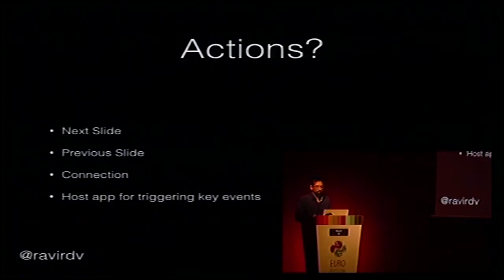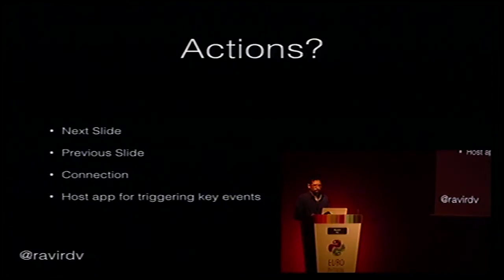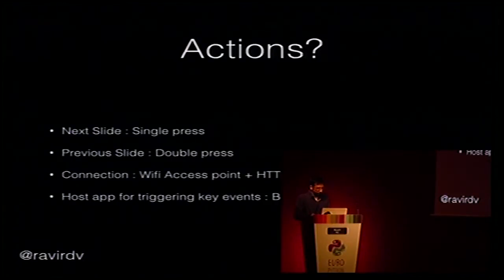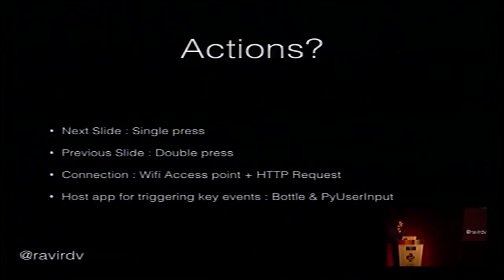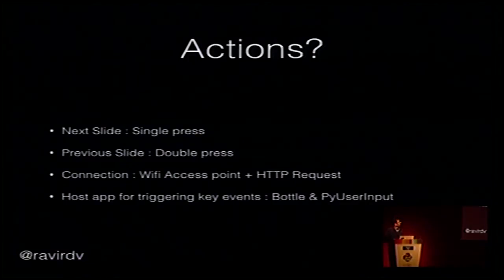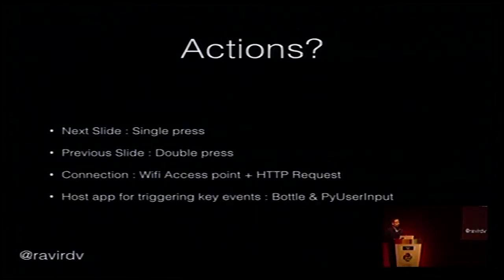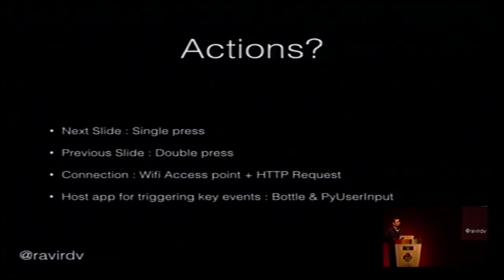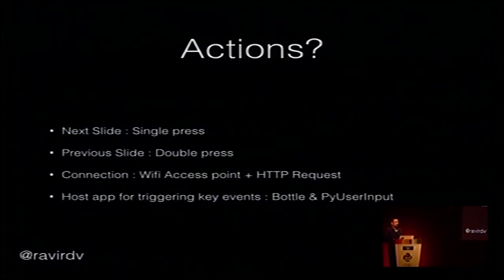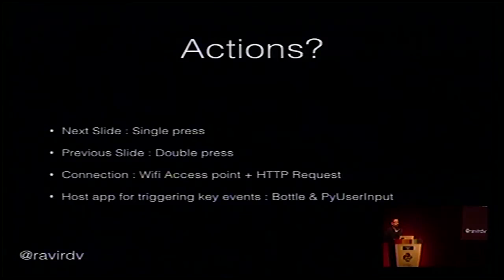We thought about how to optimize further or use better techniques to do it more quickly. The actions we decided on: next slide on one click, previous slide on double click. For connection we set it up as a Wi-Fi access point. Communication happens over HTTP — a basic GET request from Arduino would switch to the next slide, and another request would switch to the previous slide. For firing events, we used a model-based app server plus an interesting library called PyUserInput, which lets you inject events in the OS — it supports all three major operating systems: Windows, Linux, and Mac.